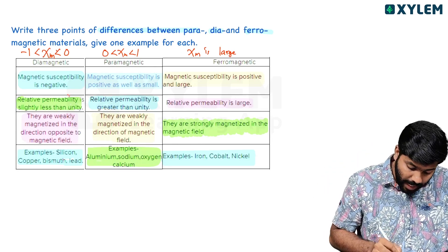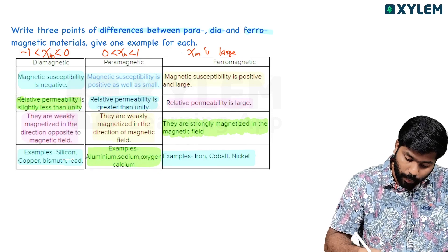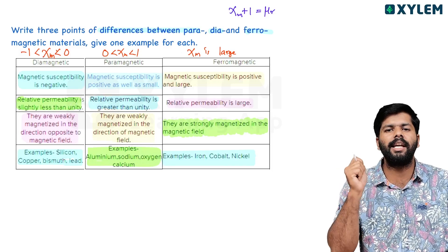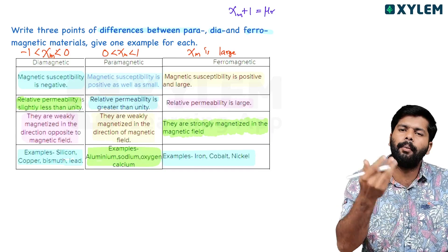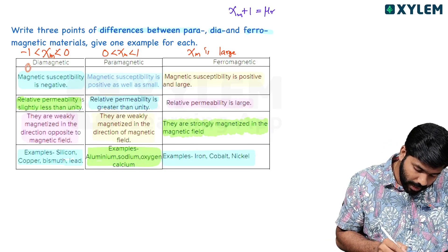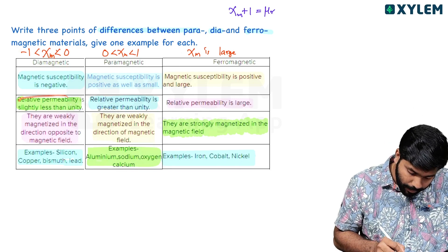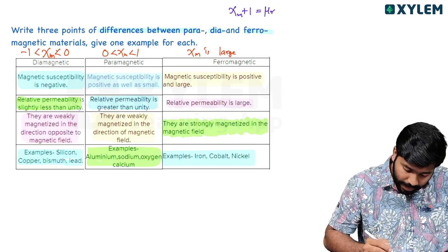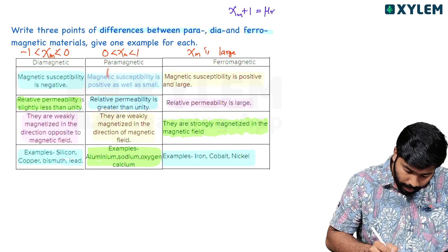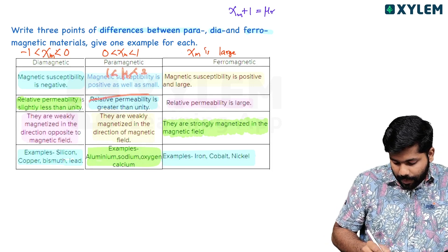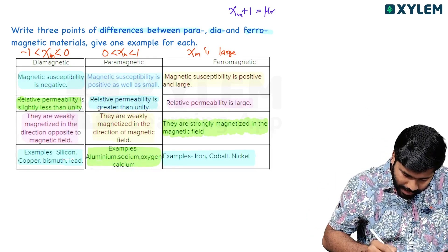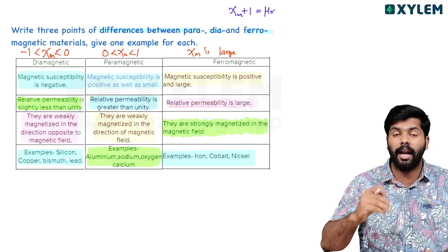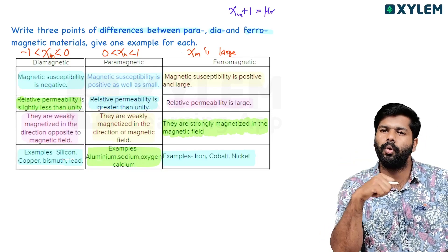The next important item is permeability and relative permeability. The relation is: χm + 1 = μr (magnetic susceptibility plus 1 equals relative permeability). For diamagnetic: χm is between -1 and 0, so μr is between 0 and 1 — relative permeability is slightly less than unity. For paramagnetic: μr is slightly greater than 1 (between 1 and 2). For ferromagnetic: μr is very large.